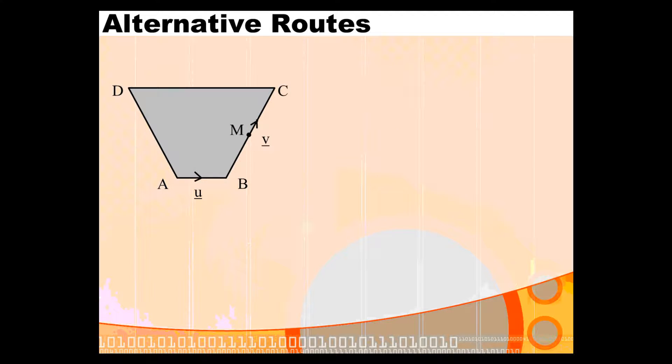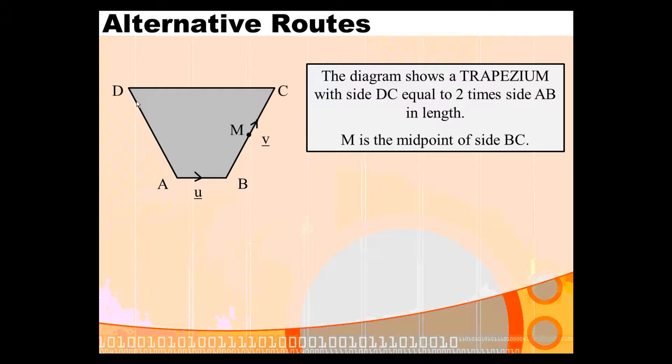If we look at this trapezium, we're told that the top edge is twice the size of the bottom. The vector from A to B is U, the vector from B to C is V, and M is the midpoint of side BC. If you're asked to find, in terms of vectors U and V, the journeys DC, AC, AD, BM, and DM, let's see what we would do.